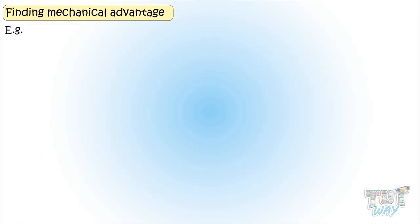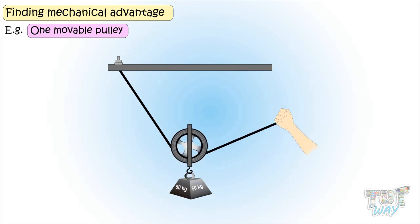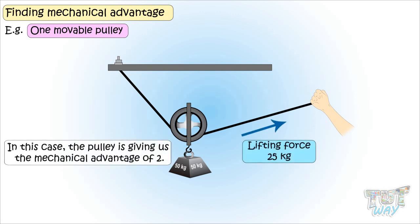Next, we have one movable pulley. That is, pulley is not fixed. One end of the rope is fixed and the other end is required to be pulled by any person. And pulley is in the center. Here, the weight of the object is equally divided between the pulley and the fixed end of the rope. And in order to lift the weight of 50 kg, 25 kg effort is required. That is, it is giving us a mechanical advantage. Here, the force applied is being multiplied by 2. So, we say mechanical advantage of 2 is there in case of one movable pulley.